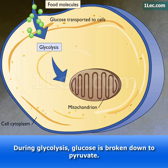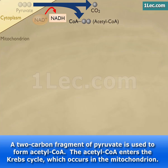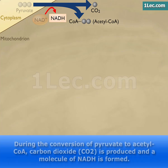During glycolysis, glucose is broken down to pyruvate. A two-carbon fragment of pyruvate is used to form acetyl CoA. The acetyl CoA enters the Krebs cycle, which occurs in the mitochondrion. During the conversion of pyruvate to acetyl CoA, carbon dioxide (CO2) is produced and a molecule of NADH is formed.